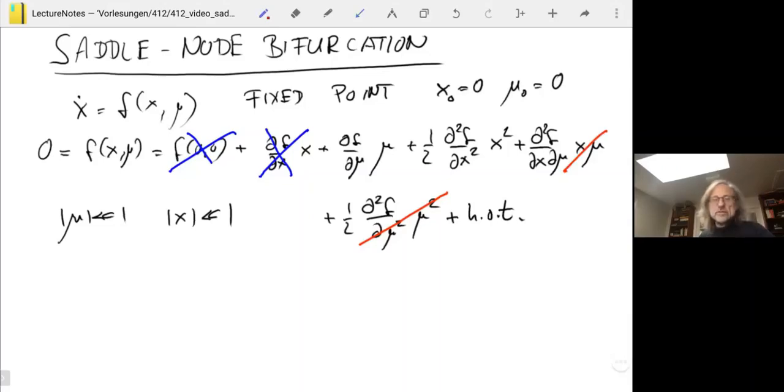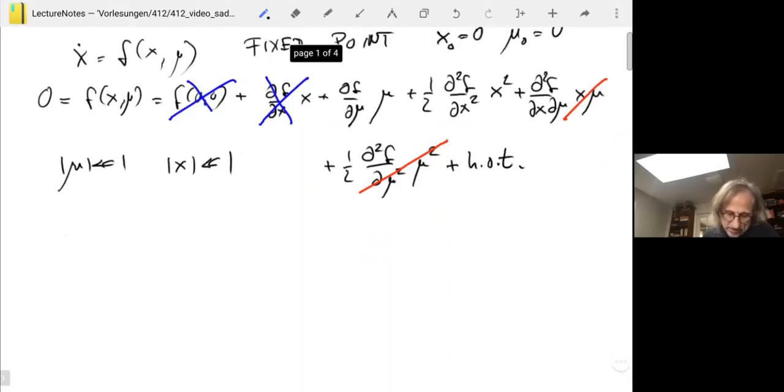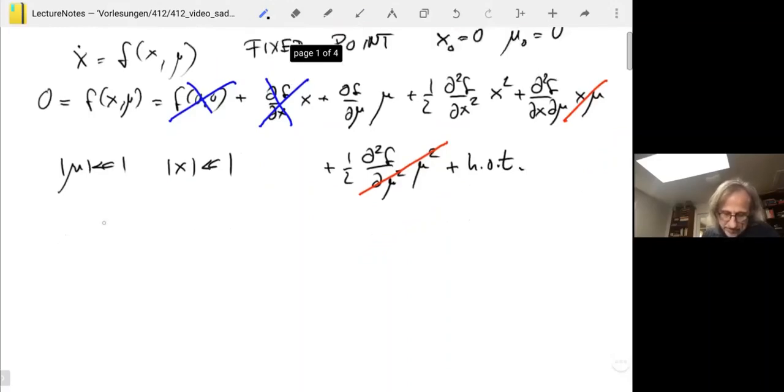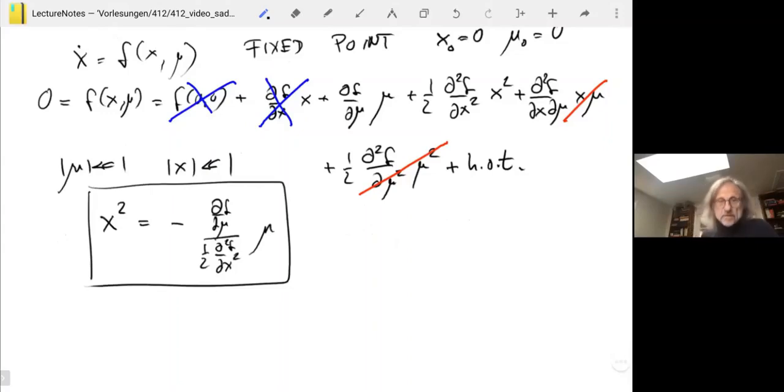Now we only have two terms. We need two terms to solve for something, so we're fine. Let's solve for it. Doing that, we get x squared equals minus df by dmu times mu divided by one half d2f by dx squared.